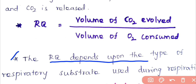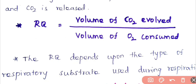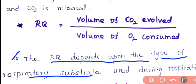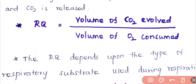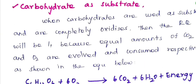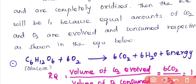The respiratory quotient depends upon the type of respiratory substrate used during respiration. The types of respiratory substrates are carbohydrates, proteins, fats, or organic acids, etc. First we will see how to calculate the respiratory quotient for carbohydrates.